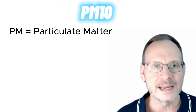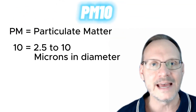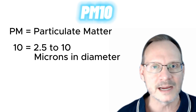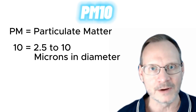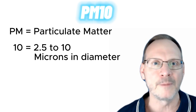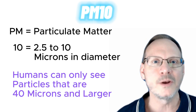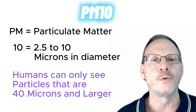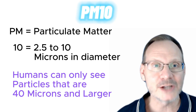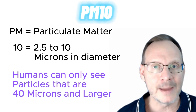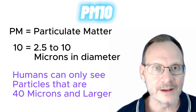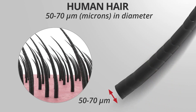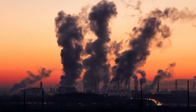We will start with PM10. The PM part stands for particulate matter, and the 10 stands for particles from 10 microns in diameter to 2.5 microns in diameter. Humans can only see particles that are 40 microns in size and larger with the naked eye, so we cannot actually see particles that are 10 microns and smaller. For scale, a human strand of hair is about 70 microns, give or take 30 microns, depending on the thickness of the hair.